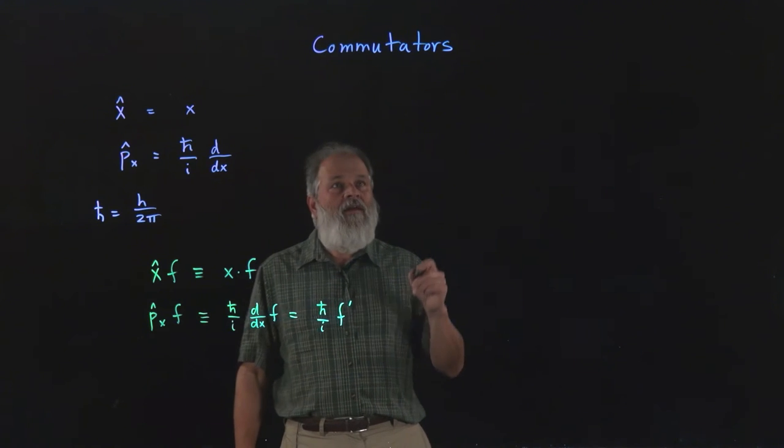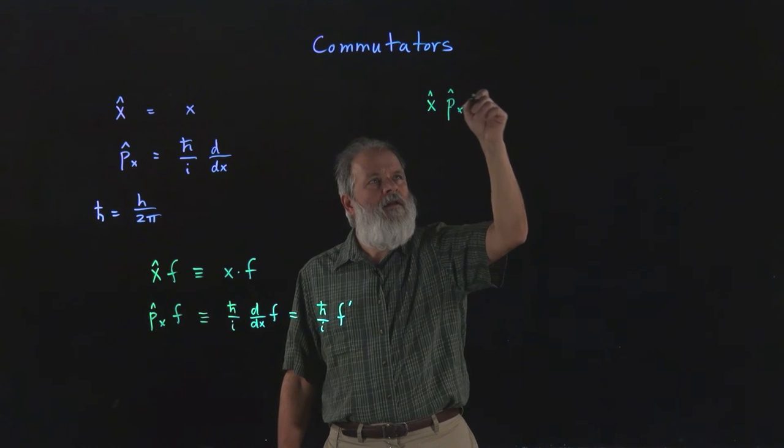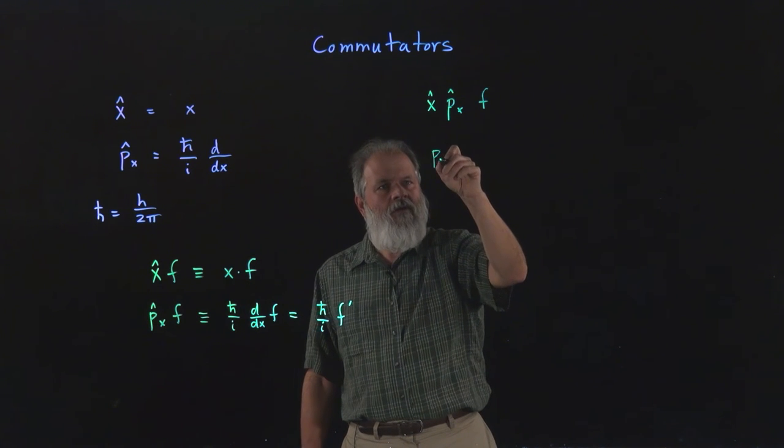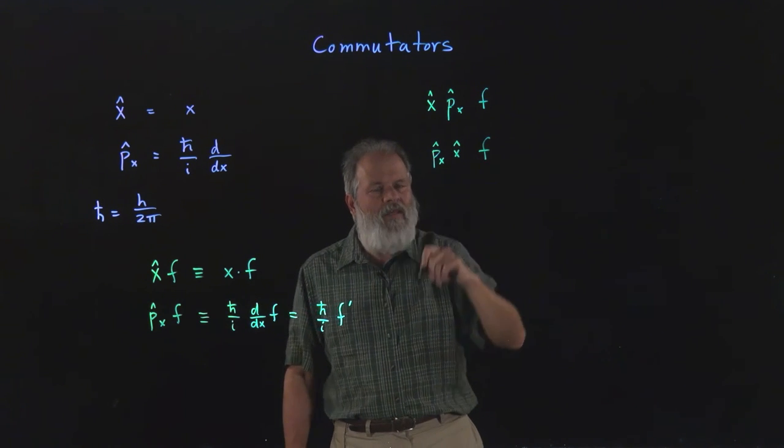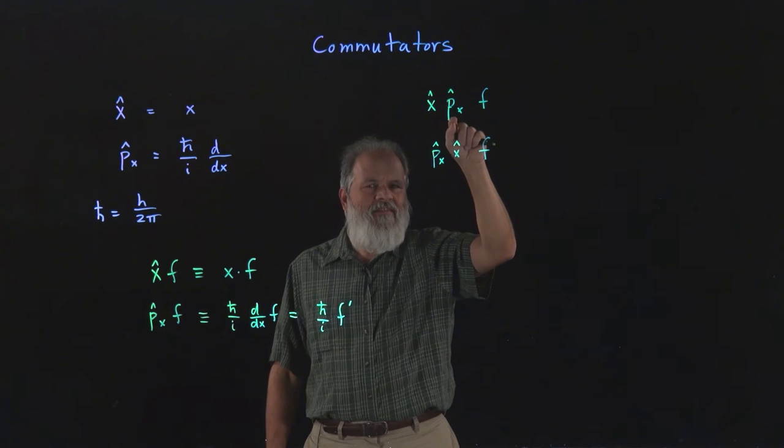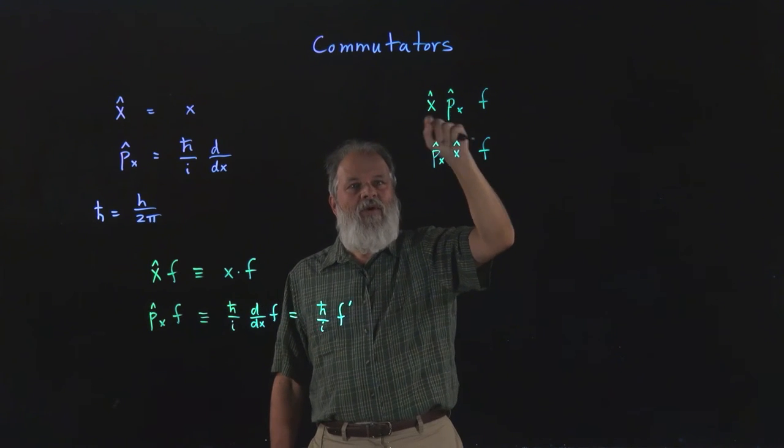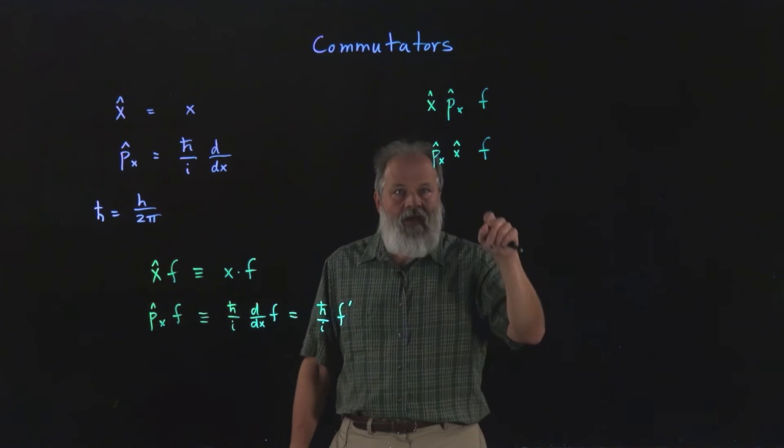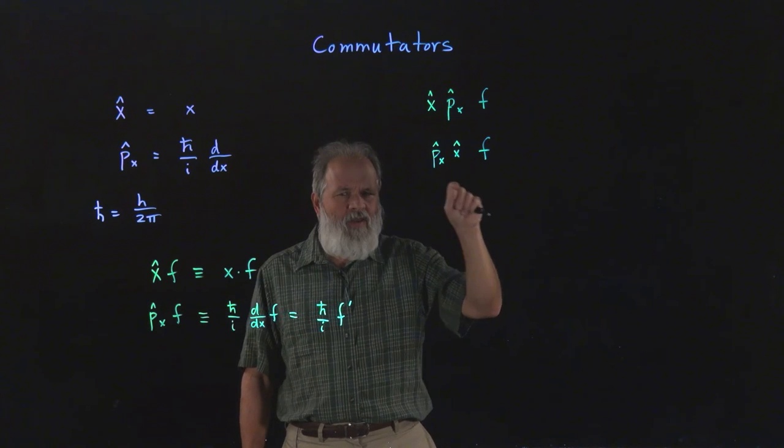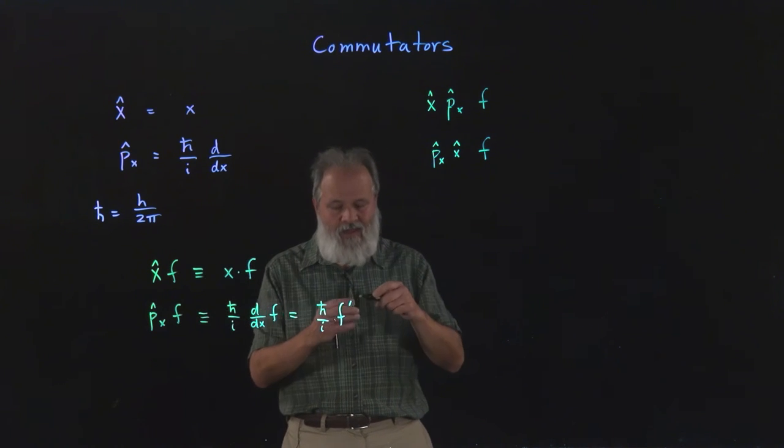Now what do we have to do for the commutator? Well, the commutator is testing whether the order in which we apply the operators is equal. Does it matter in which order we put the two operators? So when we write x hat p_x hat f, it means you apply this operator immediately to the left of the function first, get a result which is another function, then multiply that by the x hat. Whereas in this order the first thing you do to the function is you operate with x hat, which means you multiply by x first and then take the derivative.